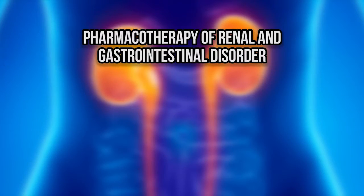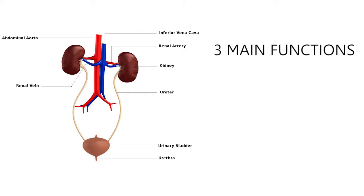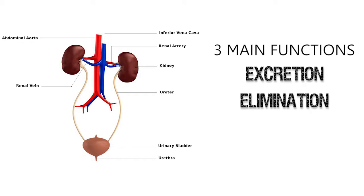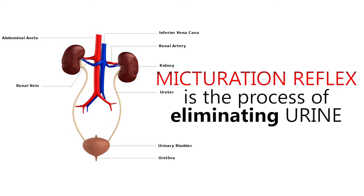Welcome to pharmacotherapy of renal and gastrointestinal disorder. In this video, we look at the age-related changes that affect kidney functions and micturition reflex. I'll start with a brief introduction of the urinary system, which will be further elaborated by other groups. Our urinary system has three main functions: excretion, elimination, and homeostatic regulation. Our kidney is the one that produces urine, and the micturition reflex is the process of eliminating urine.